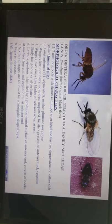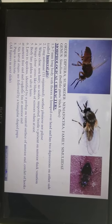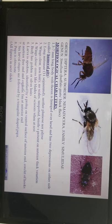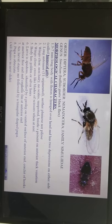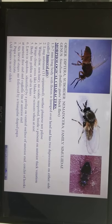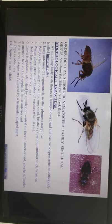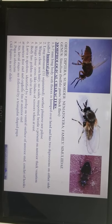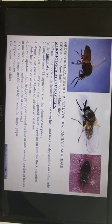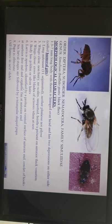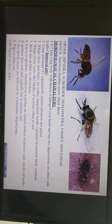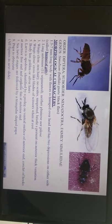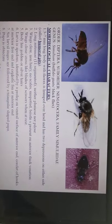The most important thing about Nematocera: 'nematos' means hair-like, so they have got hair-like filamentous antennae. Long antennae are very characteristic of this particular suborder. All the flies will have long filamentous antennae with not less than ten or eleven segments minimum — they can be fourteen to sixteen segmented antennae.